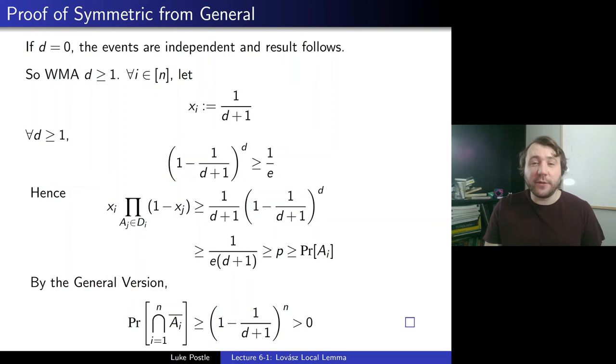So that's how you get the symmetric version from the general — the e pops out because (1 − 1/(D+1))^D is lower bounded by 1/e. Šira showed that you really can't replace e with anything smaller in the symmetric version of the local lemma.